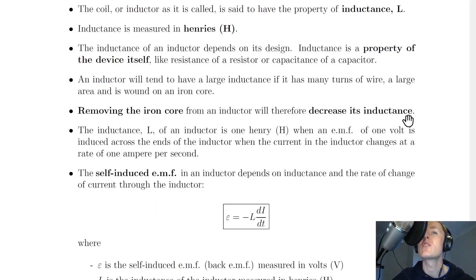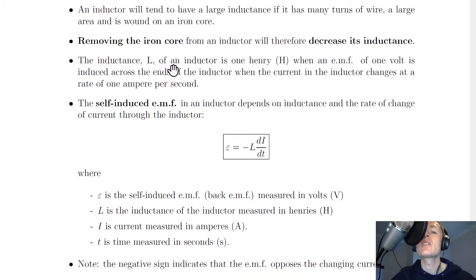And you can't physically change the inductance of an inductor without actually altering the inductor itself. We can define the inductance L of an inductor as 1 Henry when an EMF of 1 volt is induced across the ends of the inductor when the current in the inductor changes at a rate of 1 ampere per second.